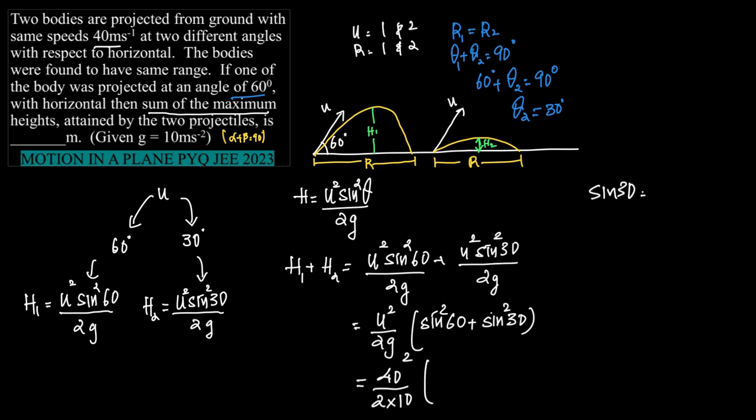What is sin 60? Sin 30 is 1 by 2 and sin 60 is root 3 by 2. In which case, what we have here is sin 60 square is 3 by 4 plus sin 30 square is 1 by 4.